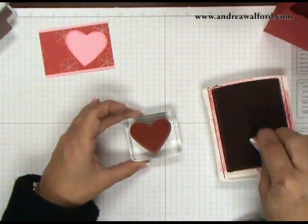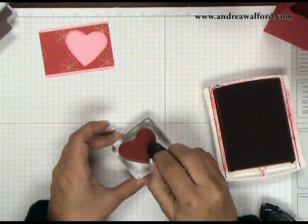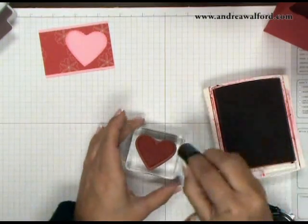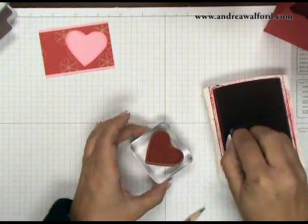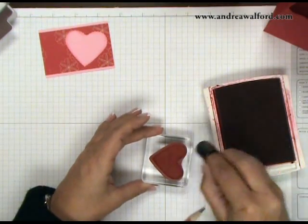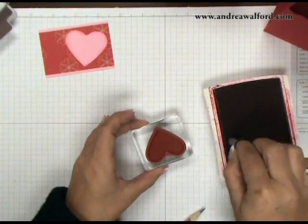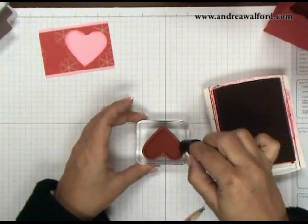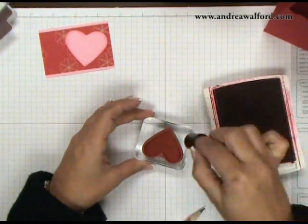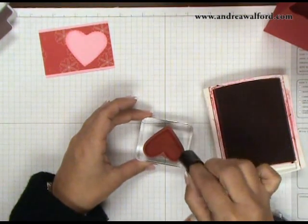And this time I'm going to take a sponge dauber. And I just want to dab my sponge dauber onto my Real Red ink pad. And then I want to use it to just ink up the very outer edges of my stamp. Now this is a more controlled version of the Rock and Roll technique. With the Rock and Roll, I would be taking my stamp that's been inked in Pretty in Pink and rocking it on my ink pad.